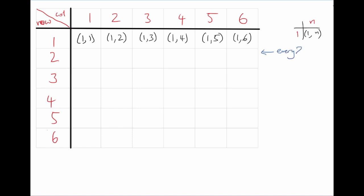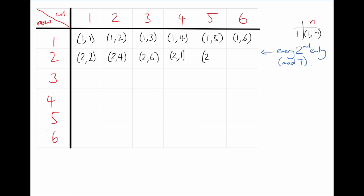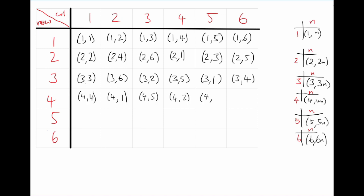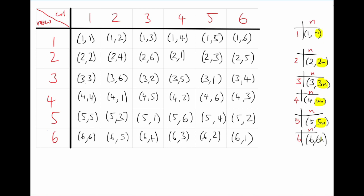In row 3, cell n contains entry 3n, and all entry numbers are taken modulo 7. Notice that even though the elements in each row have swapped around, they're all still there exactly once. For example, row 4 still contains entries 1, 2, 3, 4, 5, and 6, just in a different order. To see why: if cell n contains entry 4n mod 7, then entry e appears in cell (e/4) mod 7. Since 4 times 2 is 1 mod 7, division by 4 is just multiplication by 2. So we have mutually inverse correspondences between cells and entries, showing they match up one-to-one.